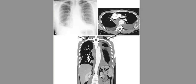What's important to identify this dissection on CT is the intimal flap. On the contrast CT, you can see the descending aorta — this line here represents the intimal flap. In aortic dissection, you're going to have two lumens: one is called the true lumen and one is the false lumen, which occurred due to the dissection.